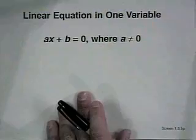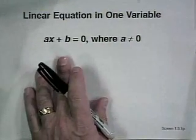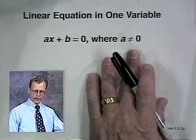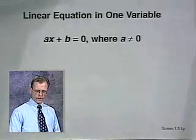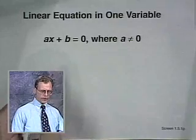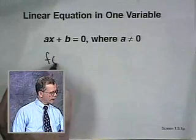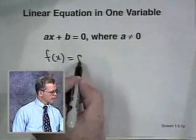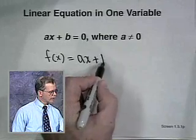We will consider only linear equations in this section. The basic form of a linear equation is ax plus b equals 0, where a is not equal to 0. Another way of writing this in a more general form is with function notation: f of x equals ax plus b.